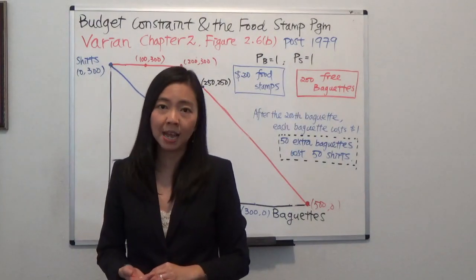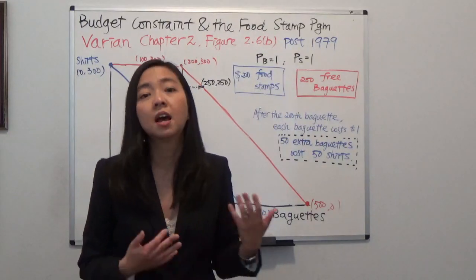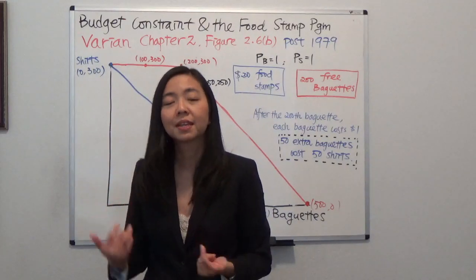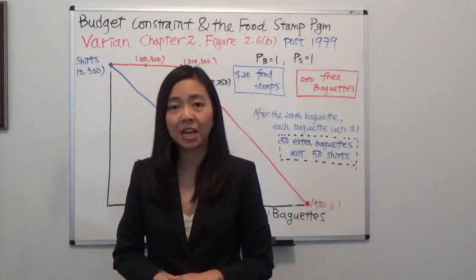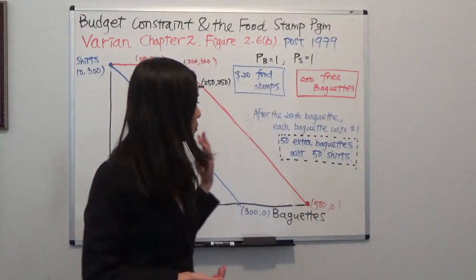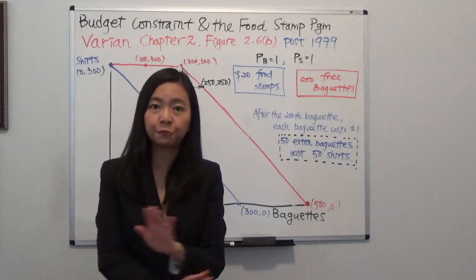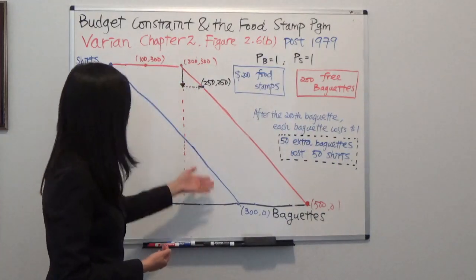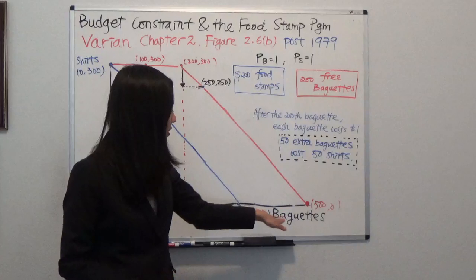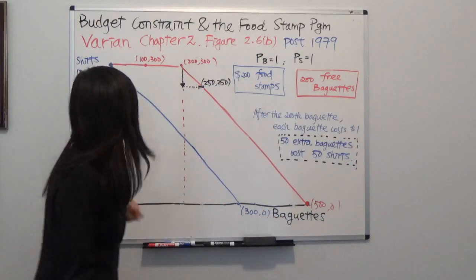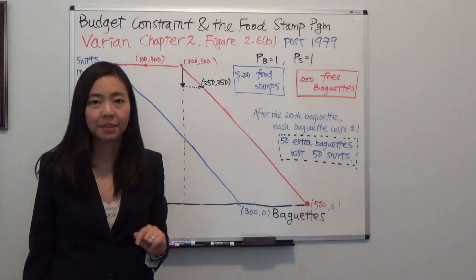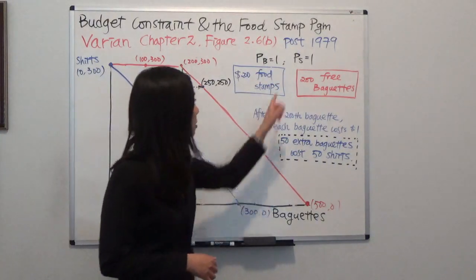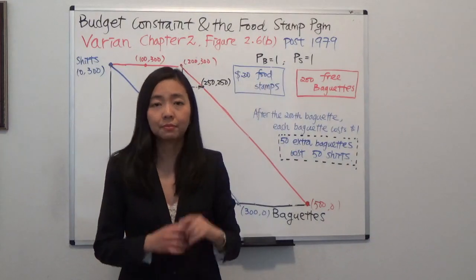So now with these food stamps, you can go to the supermarket and purchase food up to $200. Now how would that change our budget constraint? Imagine you're one of those poor families with only $300. And without the food stamp program, you only have $300. You're only buying two items: the food items — think of them as baguettes — and the non-food items — think of them as t-shirts. The price of a baguette is $1 and the price of a t-shirt is also $1.